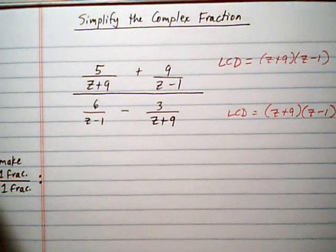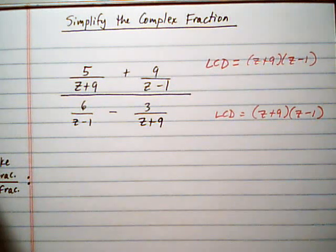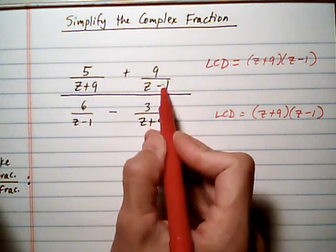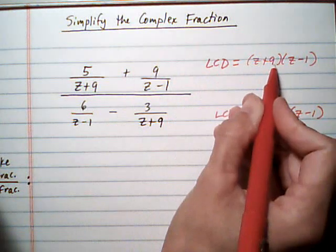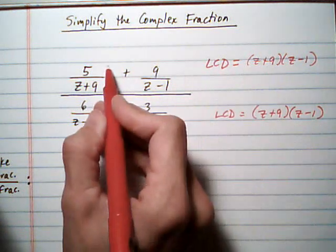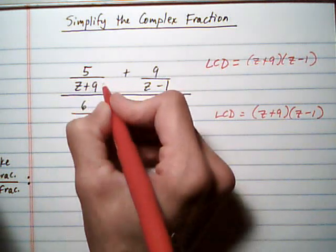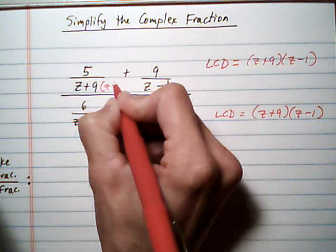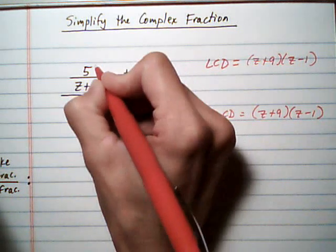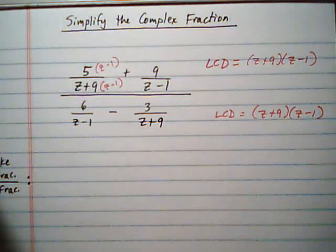We're going to force the fractions on the top to have the common LCD z plus 9 z minus 1, and we're going to make just one fraction on top. So this first one here has a z plus 9 denominator. It needs a z take away 1, so that means we're going to multiply z minus 1 top and bottom.